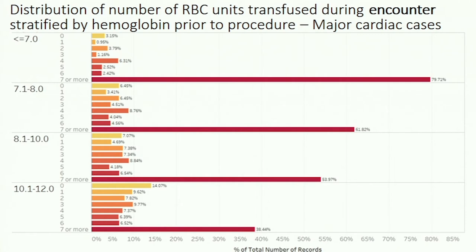We can start asking some more complex questions. If we're interested in anemia management, is there a difference in the hemoglobin prior to the procedure when we stratify procedures based upon the number of RBCs that they received during our procedure? This is combining LIS results, BECCS results, as well as ORCA data. Looking only at cardiac procedures, we do see overall a clear linear pattern between when people transfuse five or more units and a lower hemoglobin. And to a lesser extent, you can kind of see this pattern when they transfuse one to three units over the course of an encounter.